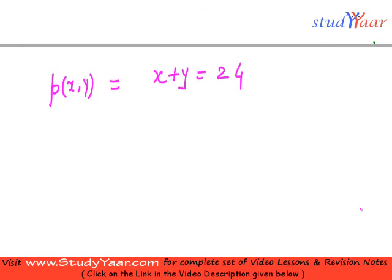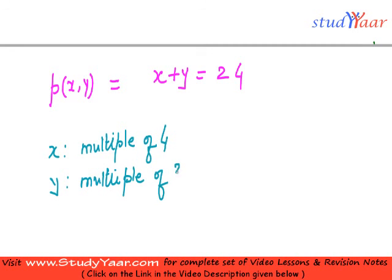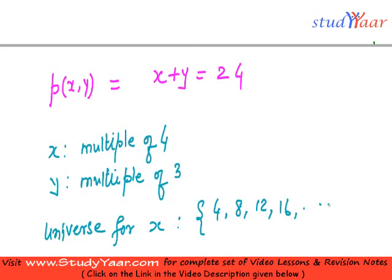Then I may have different universe of discourse for X and Y. Let us suppose that I say that X is a multiple of 4, and Y is a multiple of 3. Then these are the universe of discourses for X and Y. So what is the universe for X? Your universe for X is going to be all values like 4, 8, 12, 16 and so on.